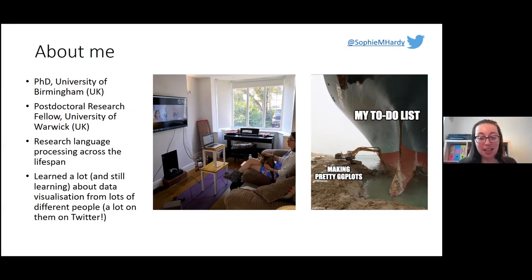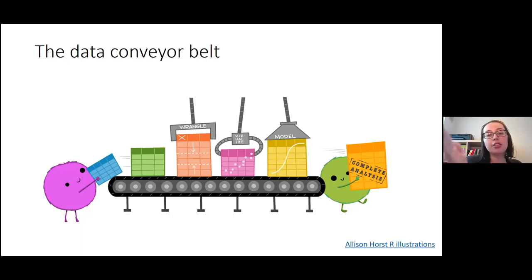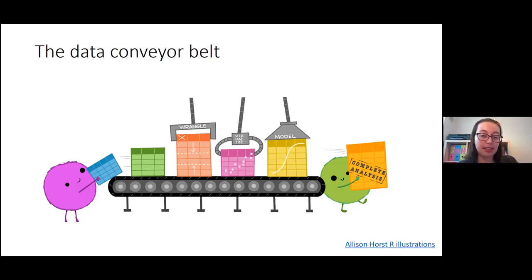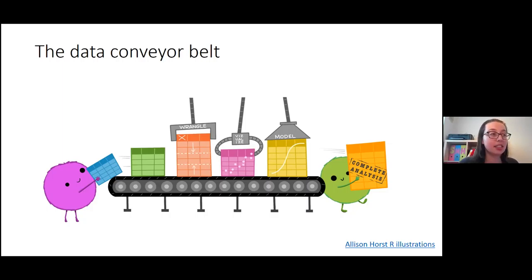Thinking about how we process data: there's a great illustration of the 'data conveyor belt.' When you get your data — whether from an experiment or from industry — you tend to go through three steps: data wrangling, visualization, and modeling or statistical analyses. What I'm concentrating on today is the middle step — visualization — which people often skip, going straight from wrangling to modeling. But visualization is crucial because without it, the output of your models is much harder to understand.